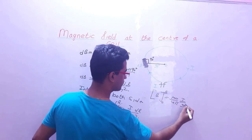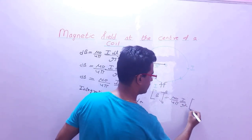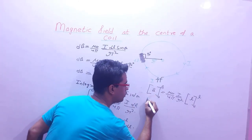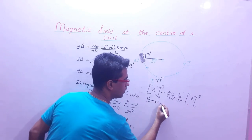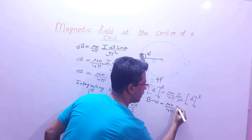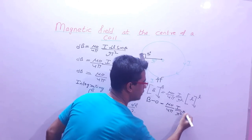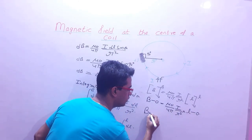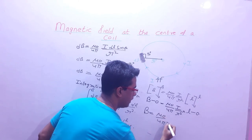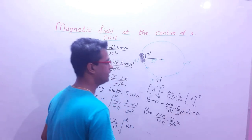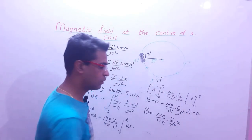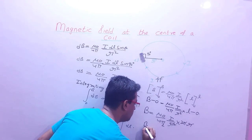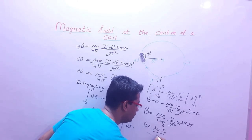B की value निकालेंगे — μ₀/4π · I/r² · integration of dl, limits 0 से l तक। यहाँ से B: μ₀/4π · I/r² · (l − 0)। l = 2πr (circumference of circle), r से cancel होगा, 2π रहेगा। And ultimately B = μ₀I / 2r।